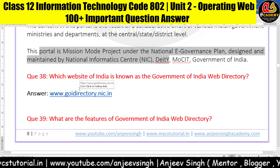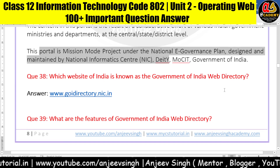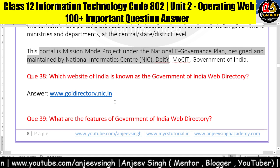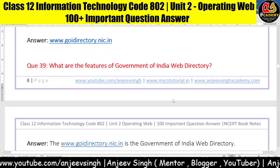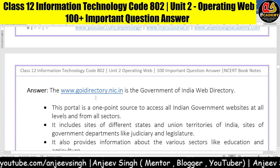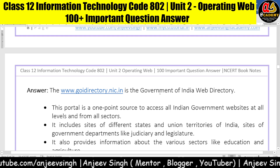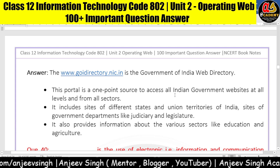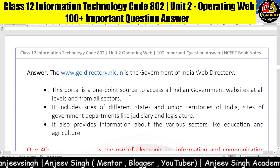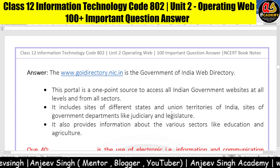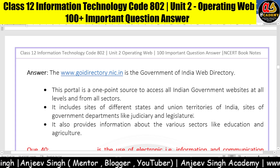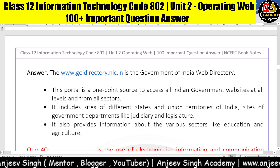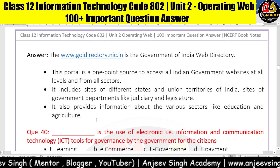Question number 38: which website of India is known as the Government of India web directory? The answer is www.goidirectory.nic.in. This portal is a one-point source to access all Indian government websites at all levels and from all sectors. It includes sites of different states and union territories, sites of government departments like Judiciary and Legislature, and also provides information about various sectors like education and agriculture.